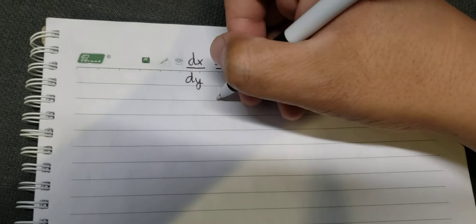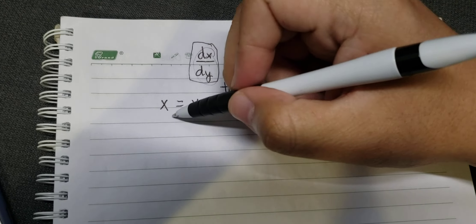For this problem with x over y, I will substitute x equals v times y. Later, because we created this substitution, we need to take the derivative for both sides.